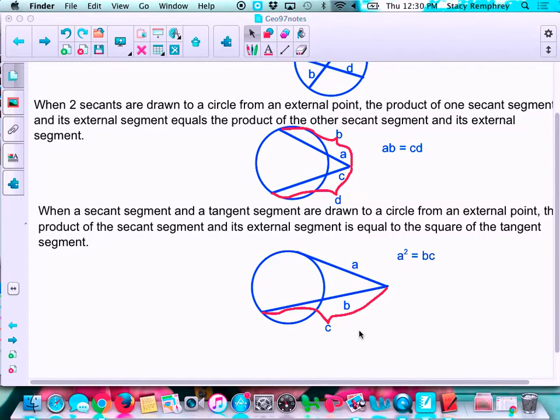And then over here, when a secant and a tangent segment are drawn to a circle from an external point, the product of the secant segment and its external segment is equal to the square of the tangent. Again, the focus here on the secant segment is B is that external part that goes from vertex to the circle, and C is the entire secant segment. So if you need to pause on some of those and draw those to make sure you have those, please do.